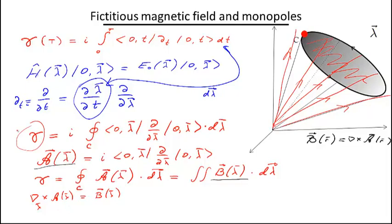To conclude this technical discussion: unlike the magnetic field in real space, which has no sources or sinks — there are no monopoles, since the divergence of the magnetic field is zero — this fictitious magnetic field actually can have sources. These sources, or monopoles in parameter space, correspond to degeneracies in the spectrum of the problem. What this means is that if we have some special values of parameter λ — call them λ* — such that two wave functions have the same energy, i.e., the energy levels cross, then these points serve as sources or monopoles of this fictitious magnetic field. This is one of the results understood by Berry in his original paper, and it is a very interesting result.